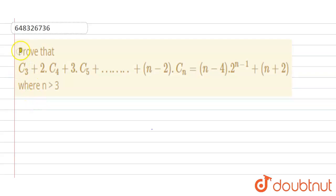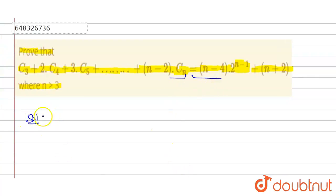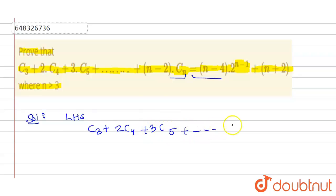Hello everyone. Here we have a question: given that, prove that C3 + 2C4 + 3C5 + ... + (n-2)·Cn is equal to (n-4)·2^(n-1) + n + 2, where n is greater than 3. We need to prove this LHS term equals the RHS.